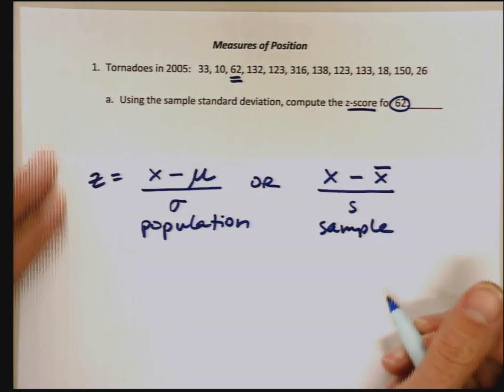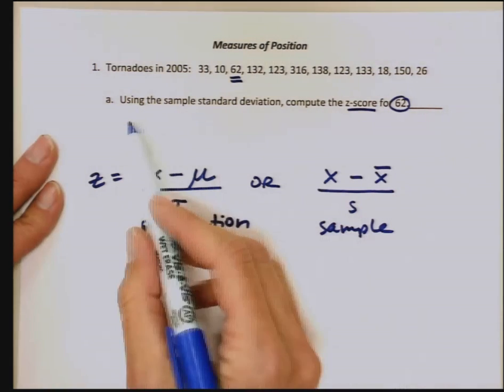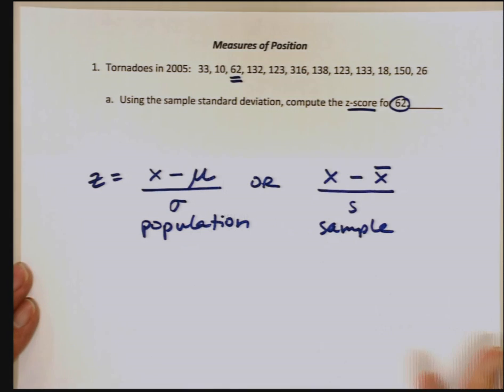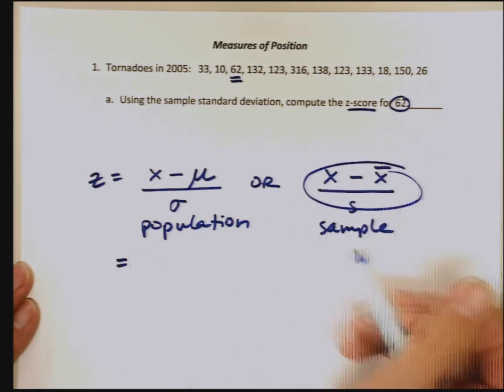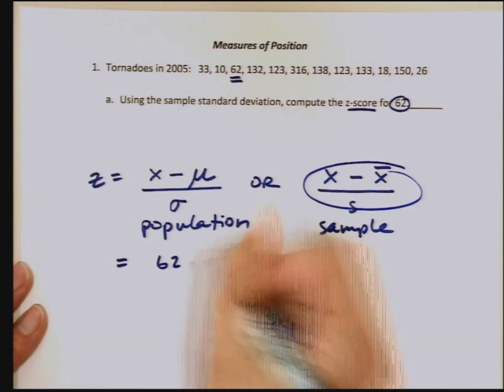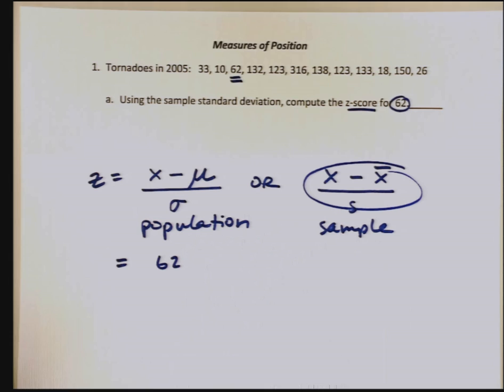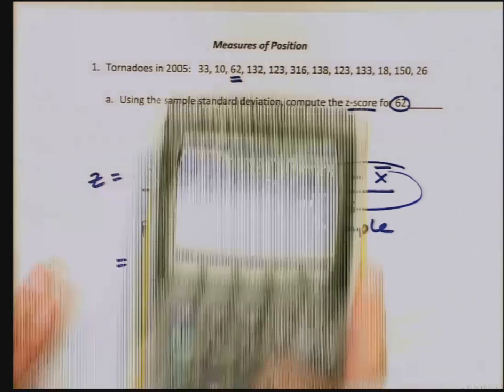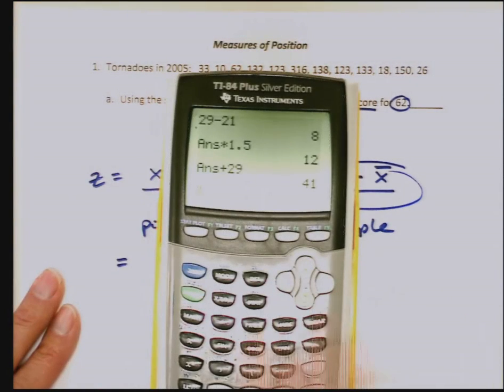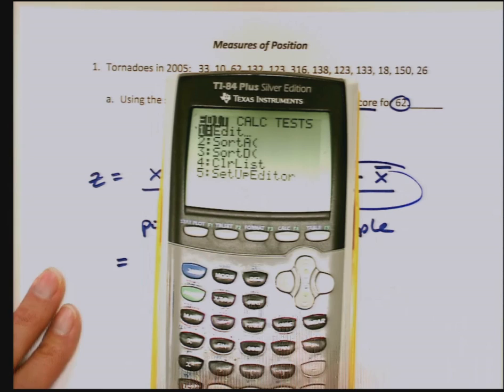We're going to treat these tornadoes as sample data, like the question indicates. So I'm going to use the sample one. We've got x, which is 62. I need the mean, so I'm going to figure out how far away we are from the mean and then compare that to the standard deviation. Let me bring my calculator up here.